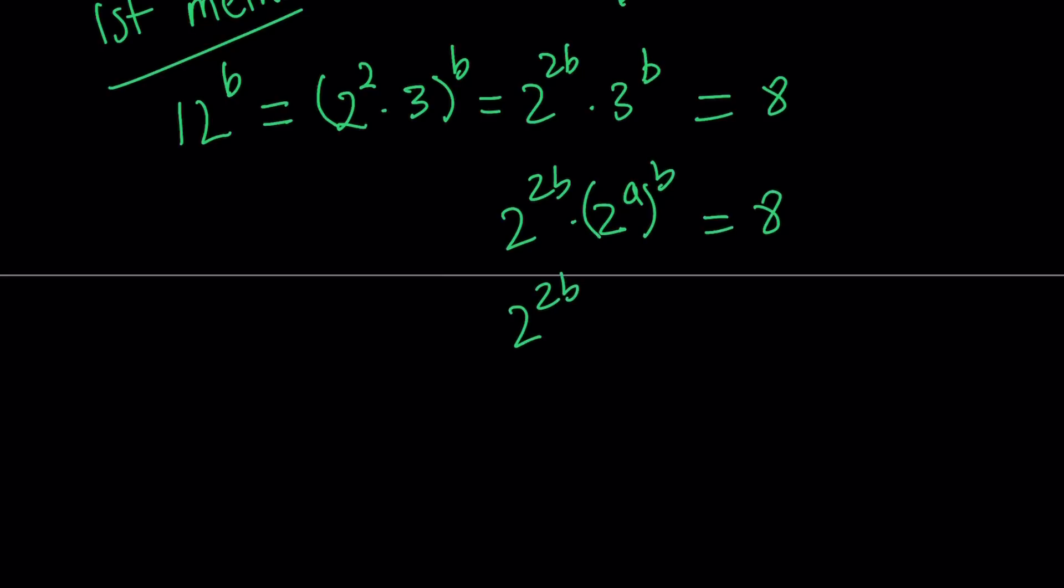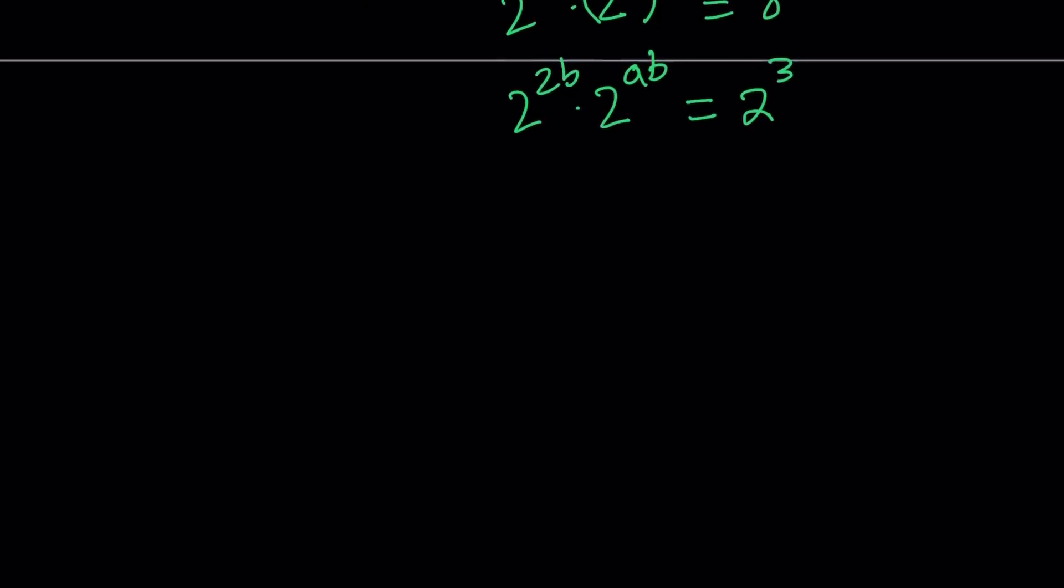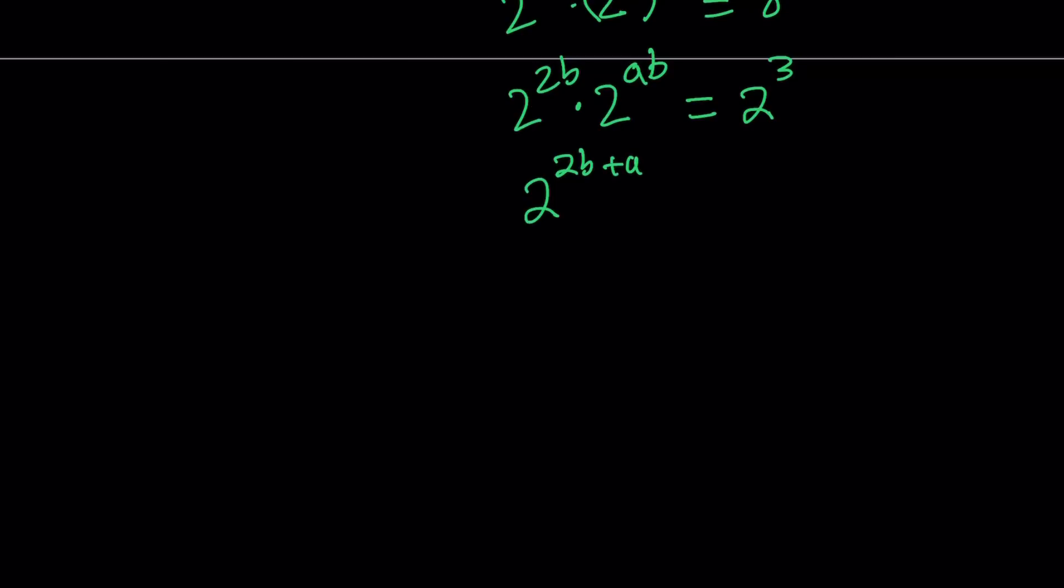This is 2 to the power 2b times 2 to the power ab equals 8 which can be written as 2 to the power 3. Now we're multiplying two powers with the same base so we can add the exponents. This gives us 2 to the power 2b plus ab equals 2 to the power 3.